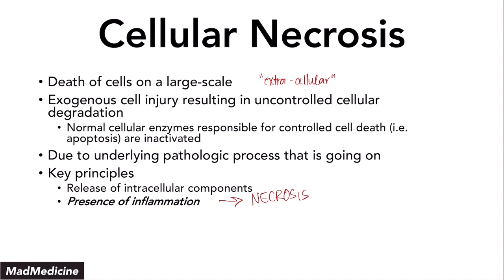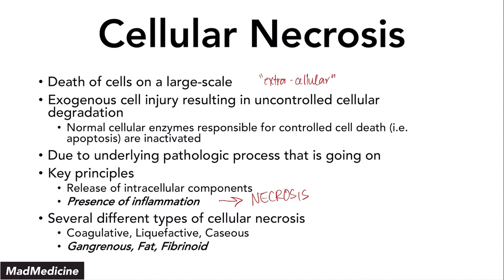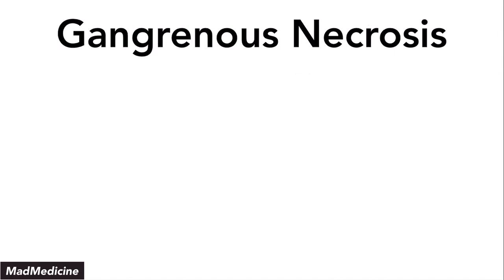Inflammation is very important because it speeds up the necrosis — it can lead to further insult, more damage, less blood perfusion, and stronger infarction. There are several different types of necrosis. We've already discussed the first three in part one, but today we're going to be discussing gangrenous, fat, and fibrinoid necrosis. Let's start with gangrenous necrosis.